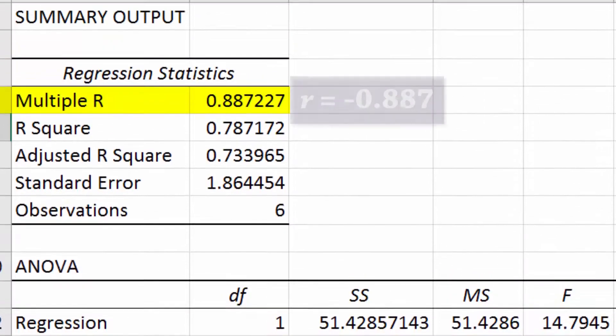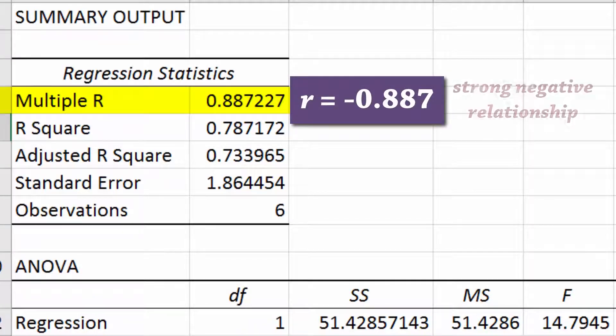So you need this negative 0.887, which signifies a strong negative relationship between X and Y.